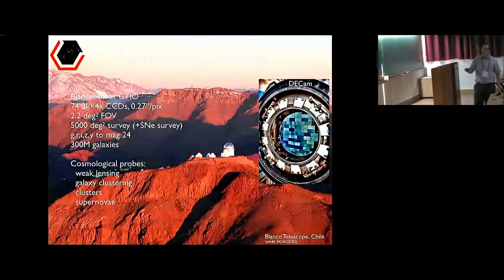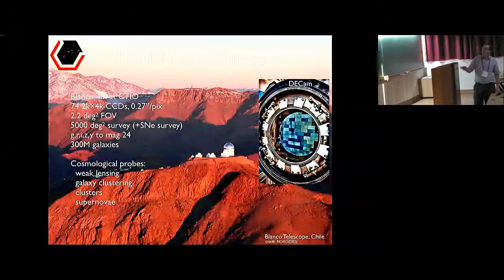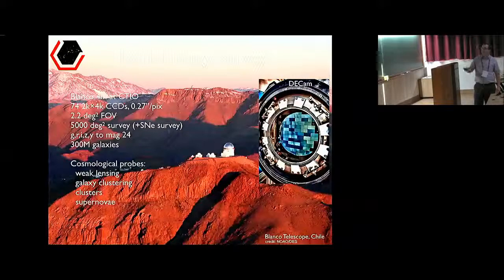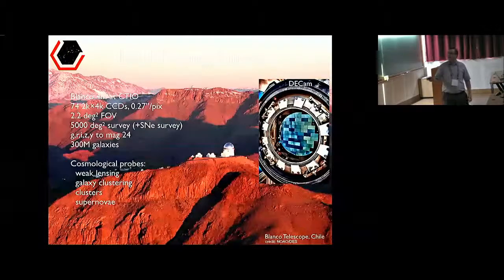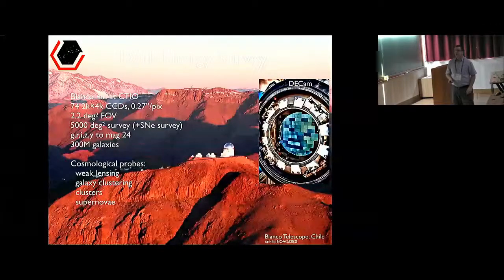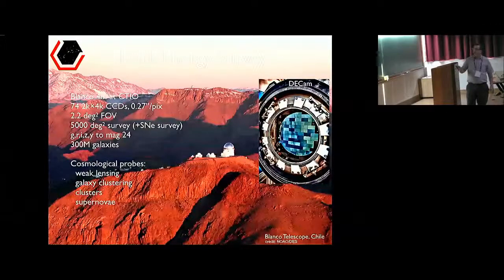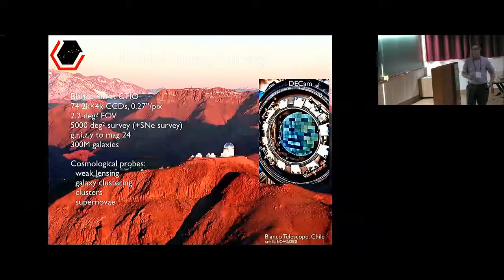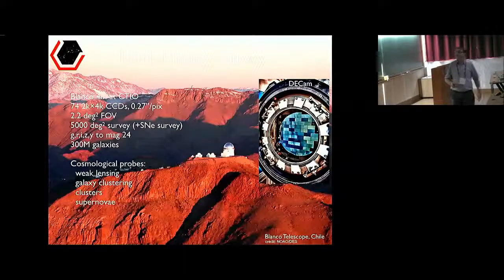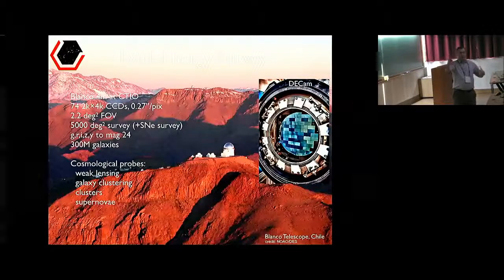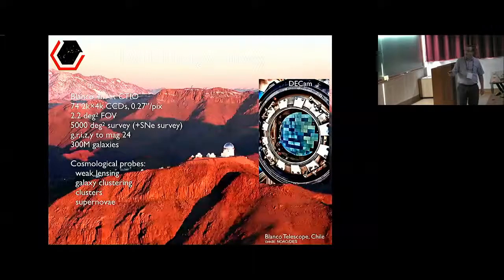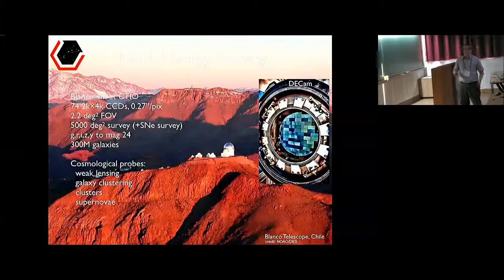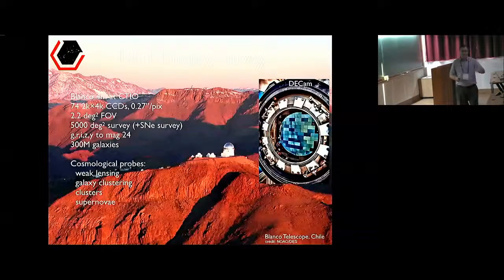This camera has 74 chips, each of them 2K by 4K with a resolution of 0.27 arc-second per pixel, and a large field of view of 2.2 square degrees. The idea is to have as large a camera as possible on this telescope to cover as large a region of the sky as possible, and eventually the survey will cover 5,000 square degrees for a wide survey in the southern sky.